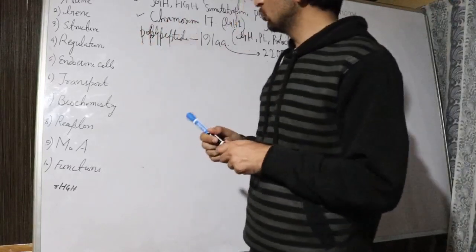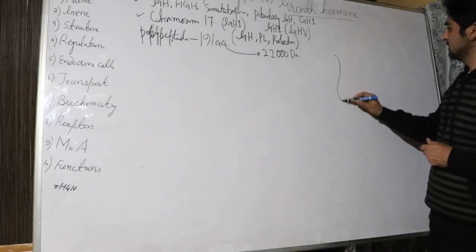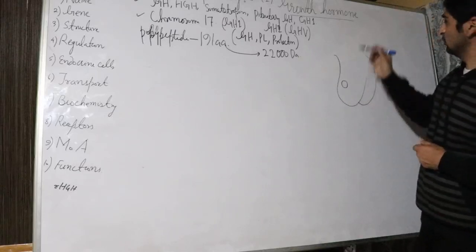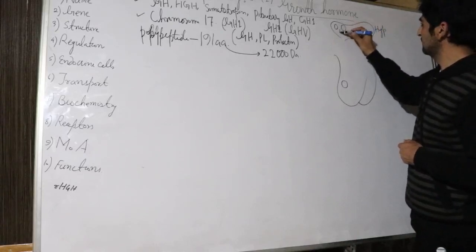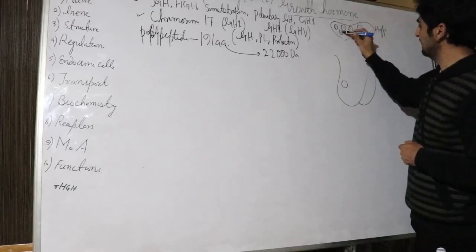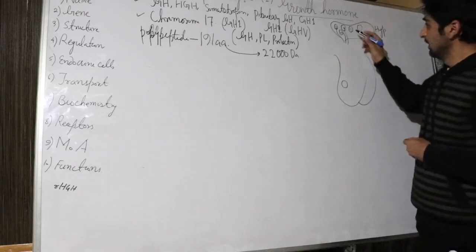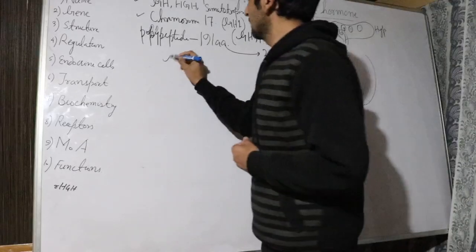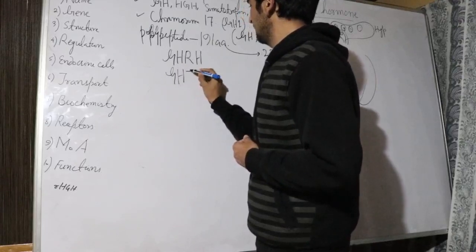Now we will talk about the regulation of growth hormone, which is very important. Growth hormone is released by the anterior lobe of the pituitary. This release is regulated by the hypothalamus. The hypothalamus has various nuclei with nerve cell bodies and long axons that produce releasing and inhibiting factors. Two important ones are the growth hormone releasing hormone and the growth hormone inhibiting hormone.